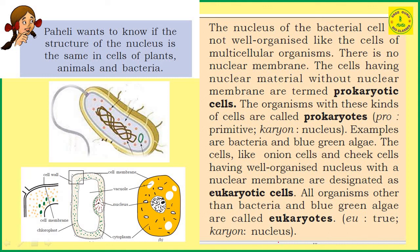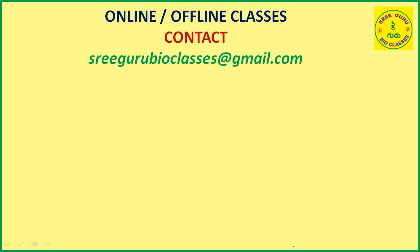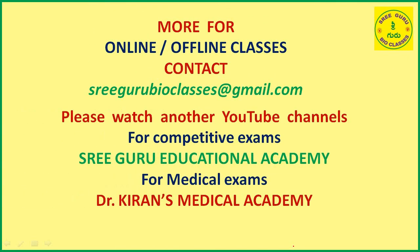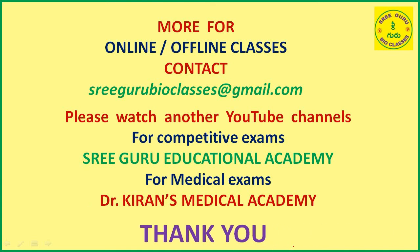'Eu' means true and 'karyon' means nucleus — true nucleus. Organisms having a true nucleus are all called eukaryotes. So friends, that is the information on cytoplasm and nucleus for this video. You can comment in the comment box. Thank you for watching.